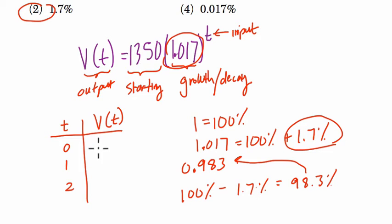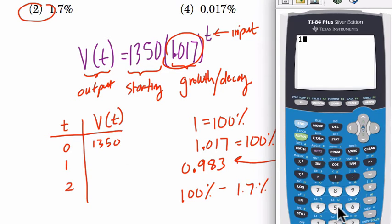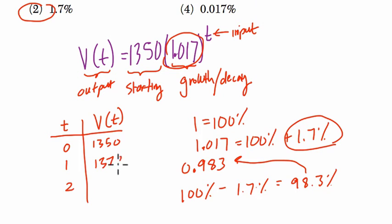So if I plug in 0, it's just going to be 1,350 because 1.017 to the 0 power is just 1, and 1,350 times 1 is 1,350. Then we take 1,350 and multiply it by 1.017 to the first power, which is just 1.017. And that is 1,372.95, right?